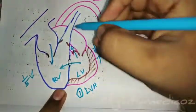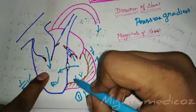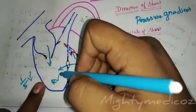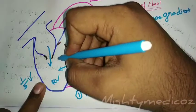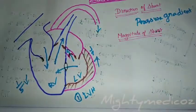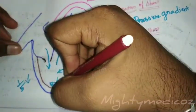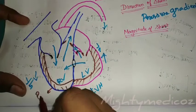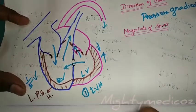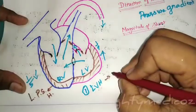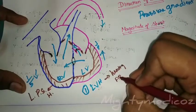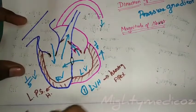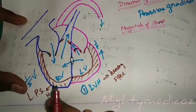The right ventricle also receives extra blood — the shunted blood from the left ventricle in addition to the physiological blood — every systole. The right ventricle must push this extra blood into the pulmonary circulation, leading to right ventricular hypertrophy. Left ventricular hypertrophy presents as a heaving apex beat, while right ventricular hypertrophy is felt as a left parasternal heave.